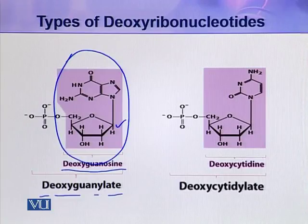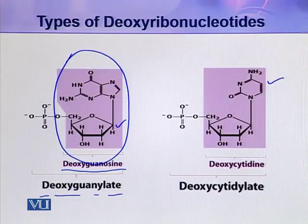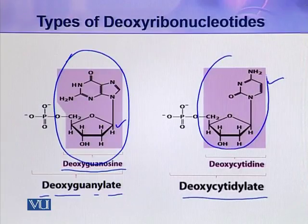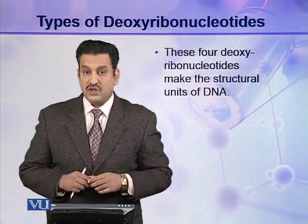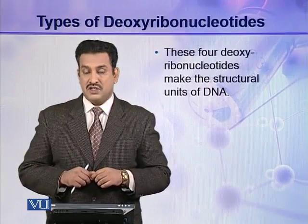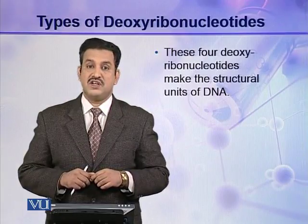In the fourth type of deoxyribonucleotide, if the nitrogenous base is cytosine, the whole nucleotide is called deoxycytidylate. So these are the four types of deoxyribonucleotides which are present in a DNA molecule: deoxyadenylate, deoxythymidylate, deoxyguanylate, and deoxycytidylate. These four deoxyribonucleotides make the structural units of a DNA molecule.